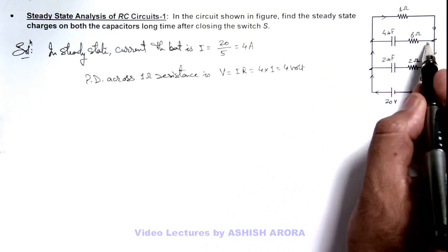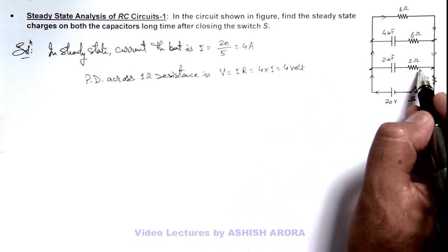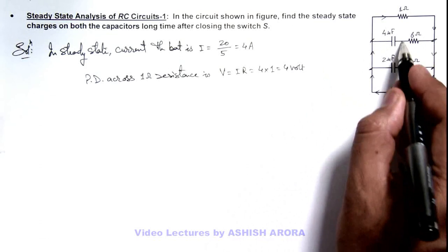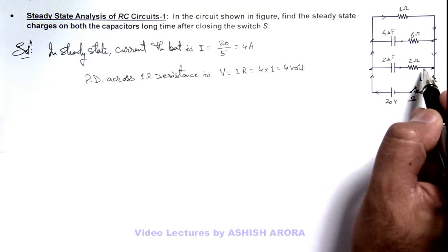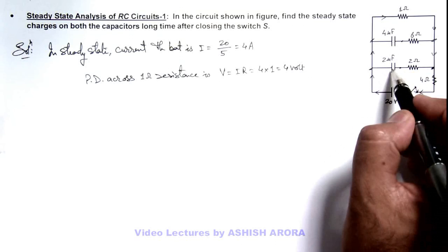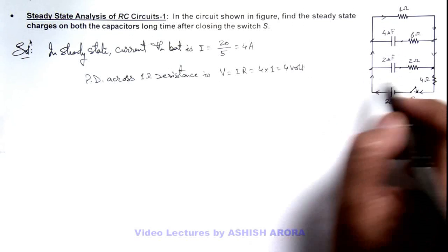As no current is flowing through these 6 ohm and 2 ohm resistances, the potential here and this potential will be equal. So we can say across both of these capacitances the potential difference will be 4 volt.